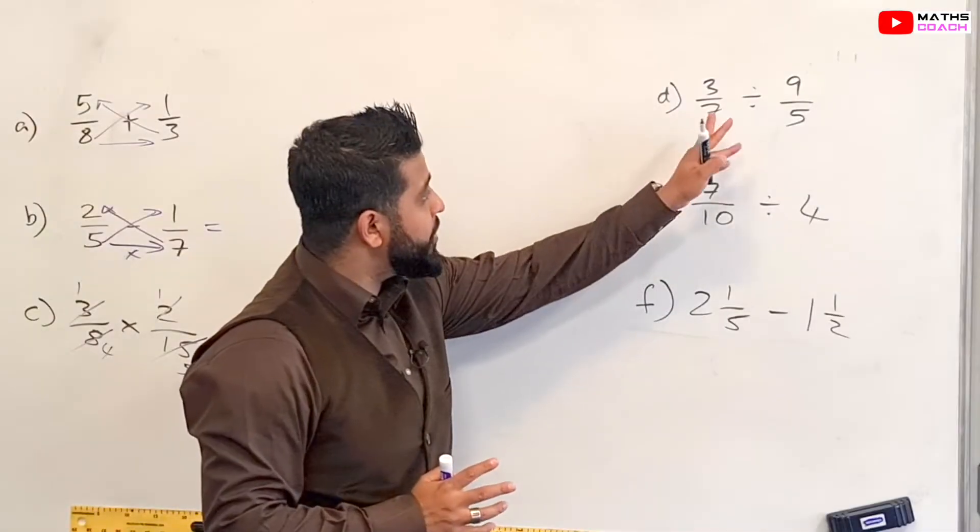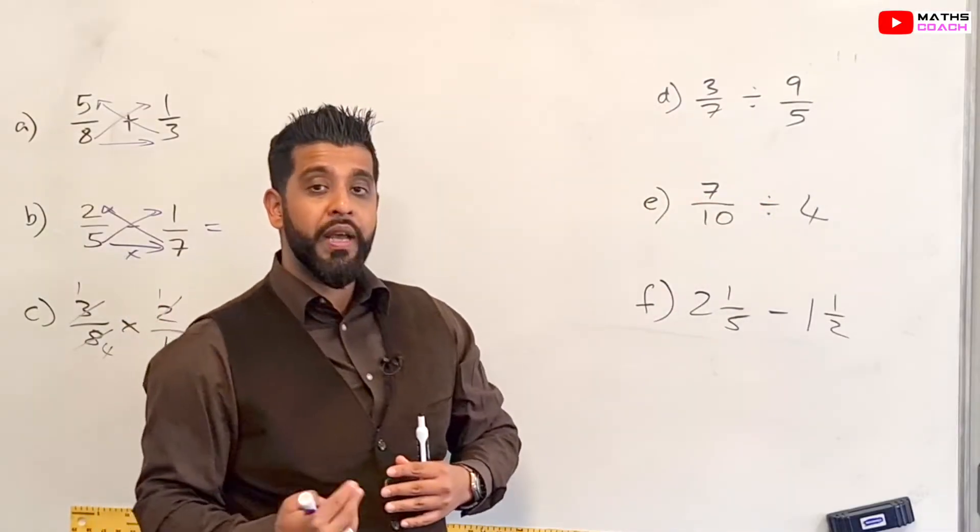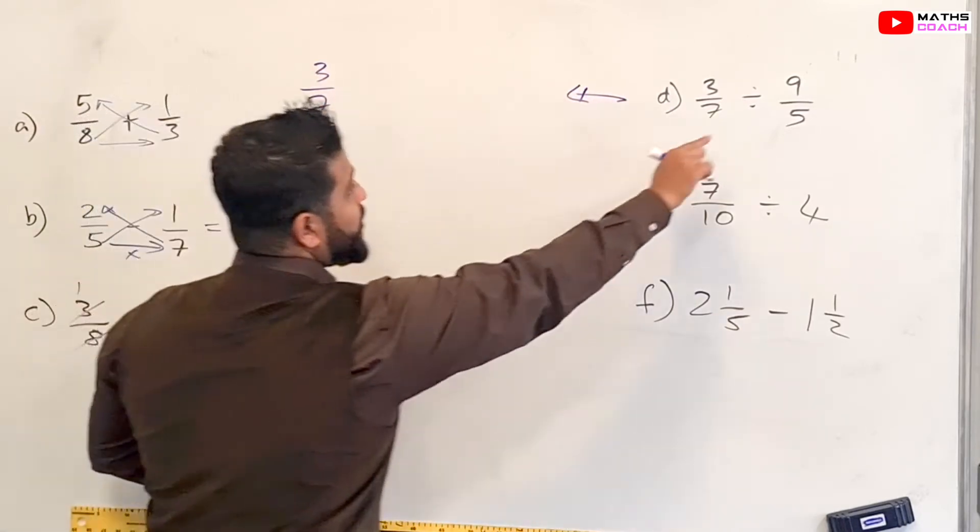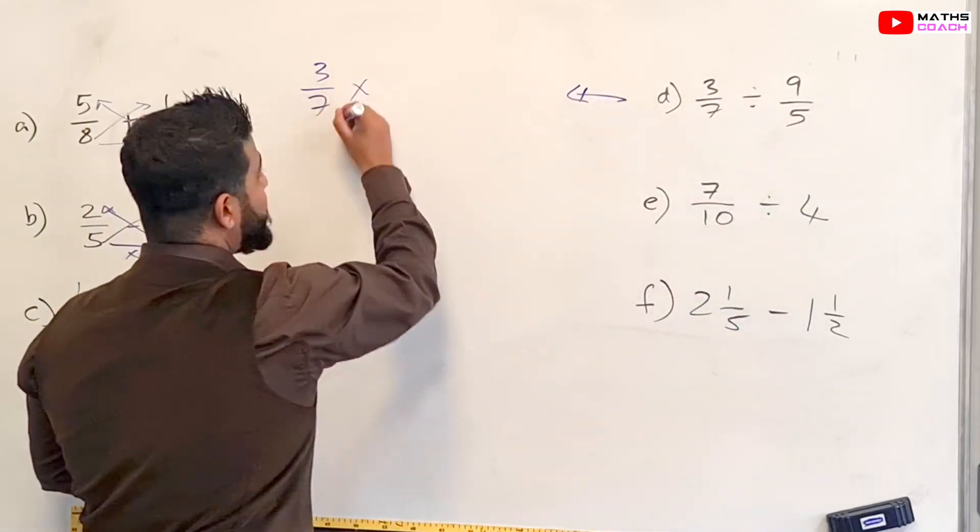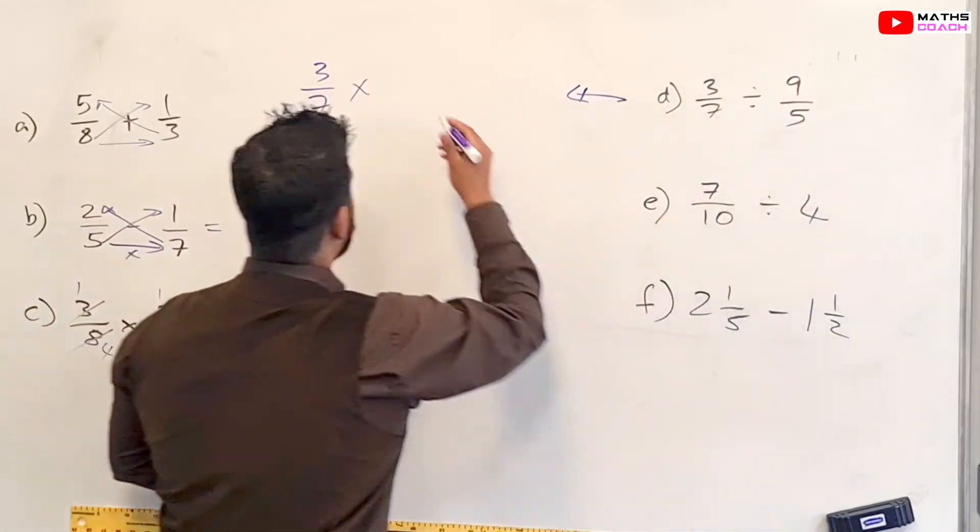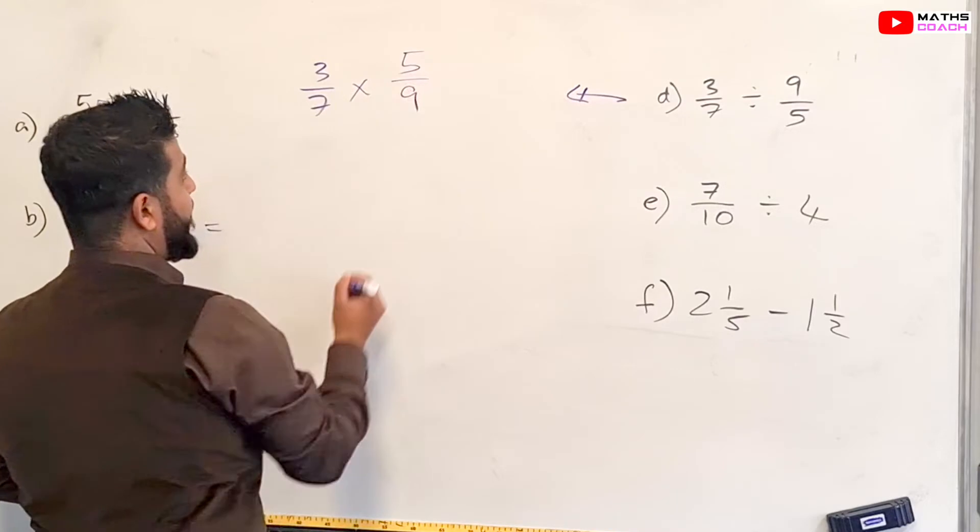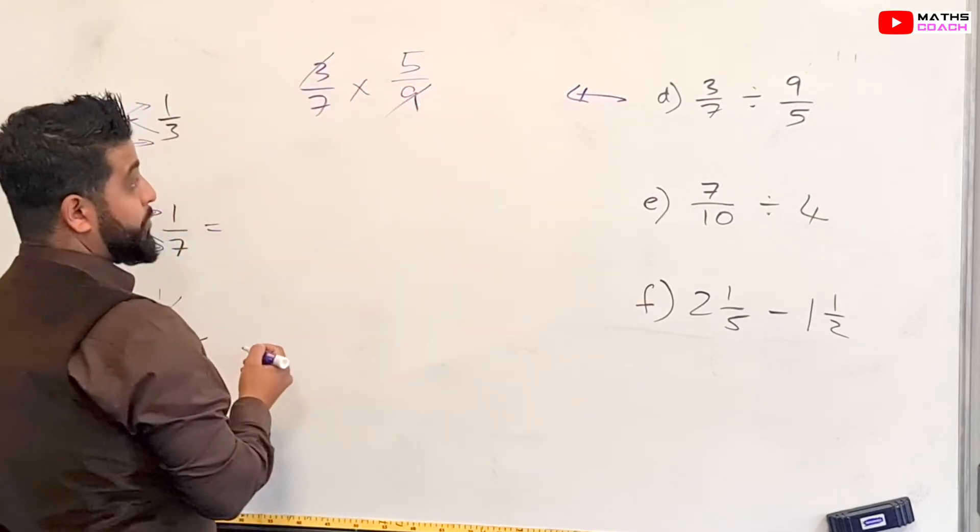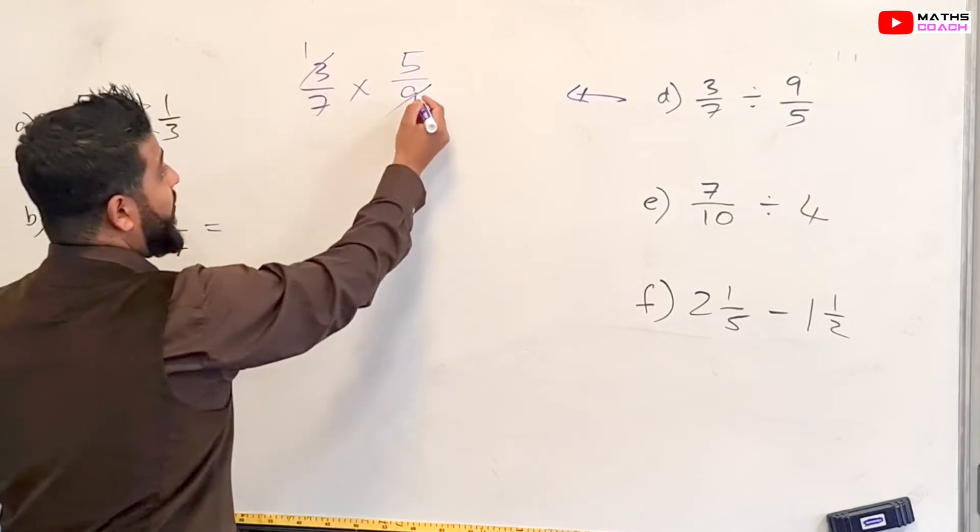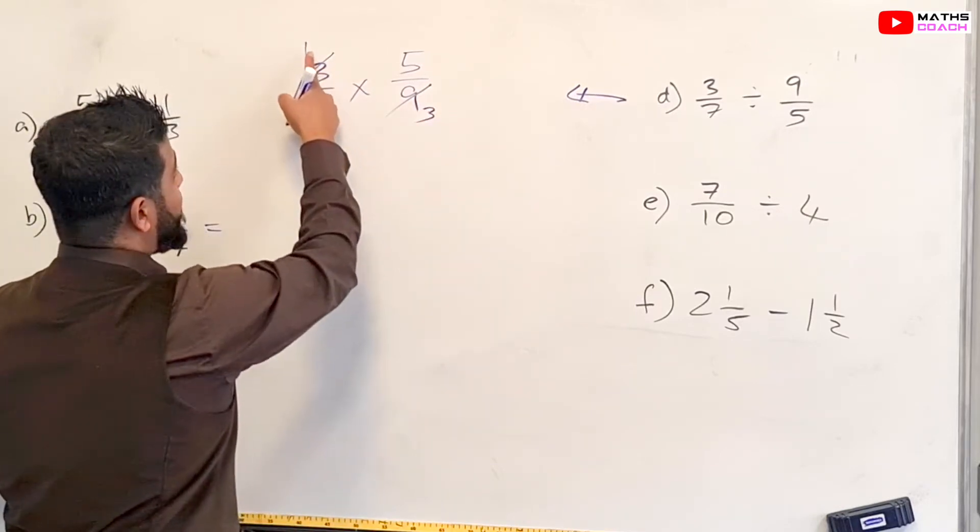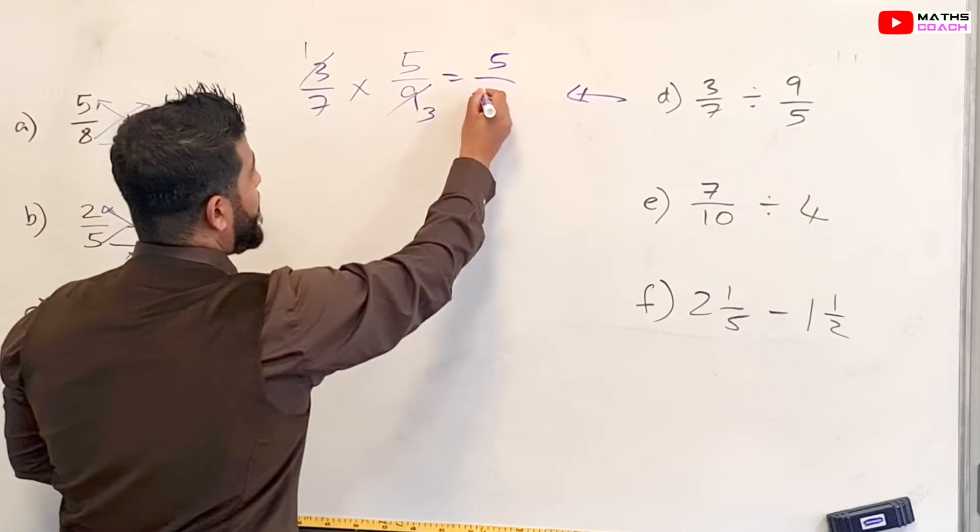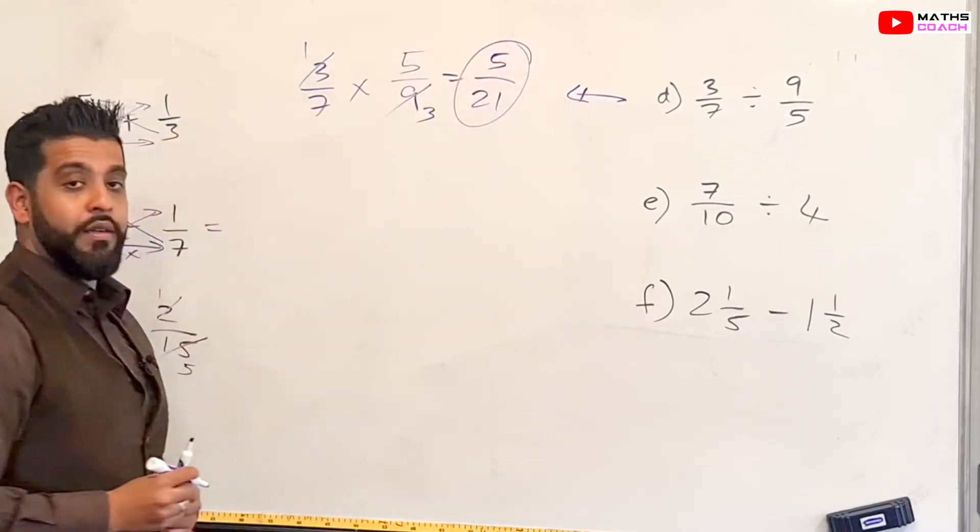Now with division it's exactly the same as multiplying but you do one extra step. So you have 3 over 7. You turn this into a multiplication sign and you flip those. So you end up with 5 over 9. And you look to simplify diagonally. So both of these are divisible by 3. 3 divided by 3 is 1, and 9 divided by 3 is 3. So you end up with 1 times 5 which is 5, and then 7 times 3 which is 21. And that's your final answer.